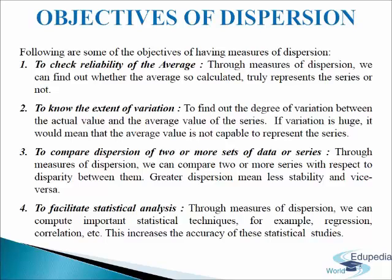Measures of dispersion are used to test to what extent an average represents the characteristics of a series. A low value of dispersion implies greater homogeneity among various items, and consequently the average can be taken as more reliable or representative of the distribution. On the other hand, if the dispersion is large, then the data values are more deviated from the central value, implying that the average is not representative of the data and hence not quite reliable.